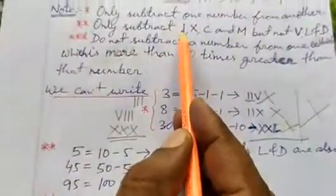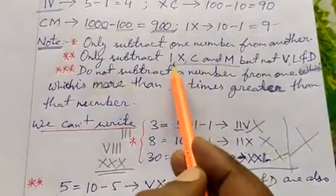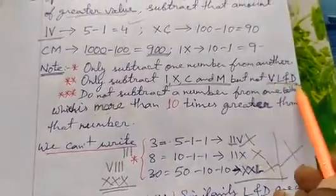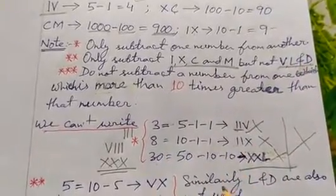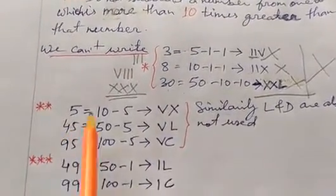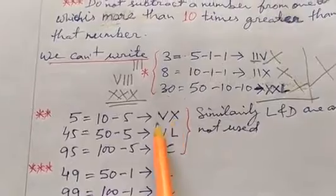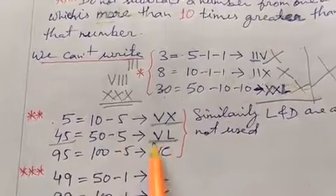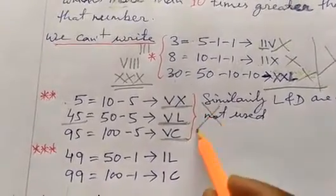Sub-rule 2: only I, X, C, and M can be used for subtraction — not V, L, and D. V, L, and D are not used for subtraction from a higher number. For example, for 5 we cannot write VX. For 45, we cannot write VX or VL — that would be 50 minus 5, which is a wrong notation. For 95, we cannot write VC — these are all wrong notations and not the correct way.